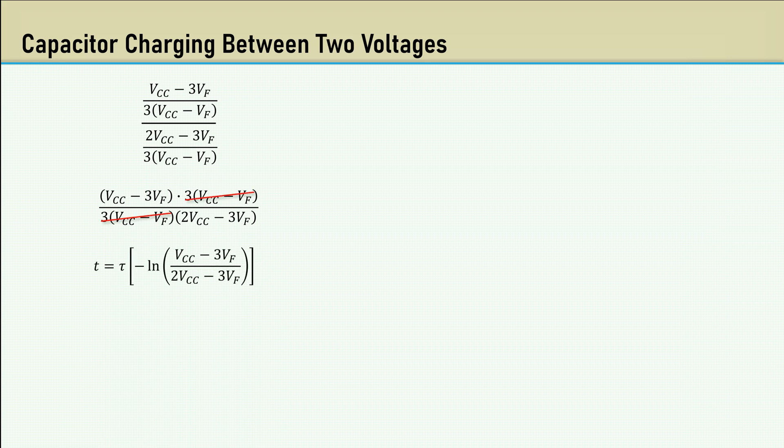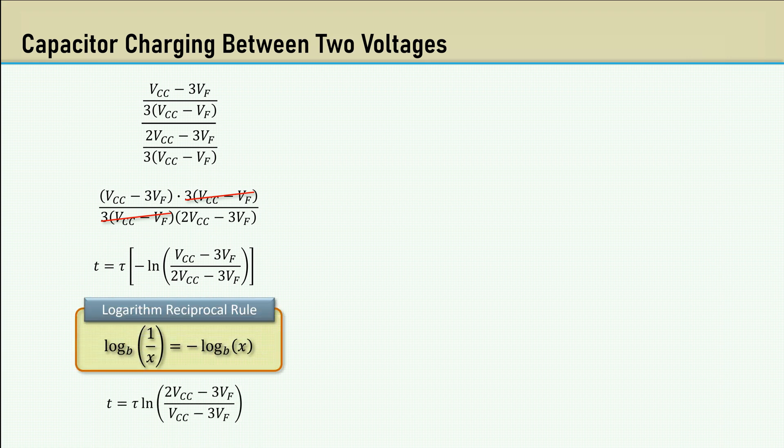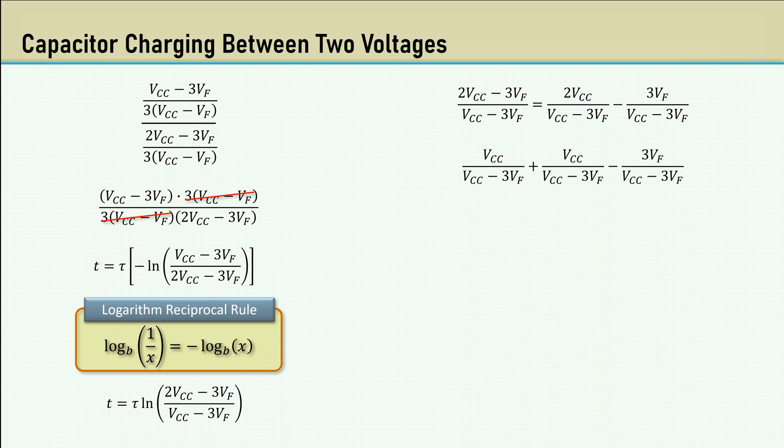We can get rid of that pesky negative sign in front of the natural log using the logarithm reciprocal rule, where the log of 1 over X equals the negative log of X. We can simplify this even further, splitting the fraction, then splitting the fraction again where 2 VCC breaks up into individual VCCs. Then we can combine these terms. That lets us cancel these terms.